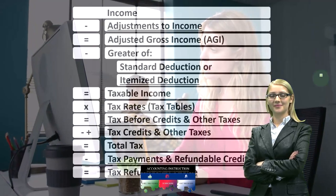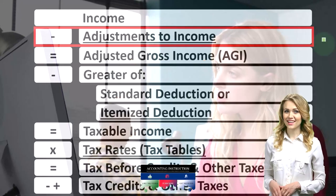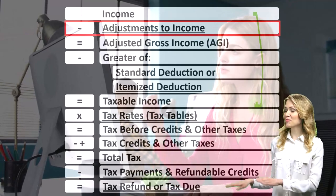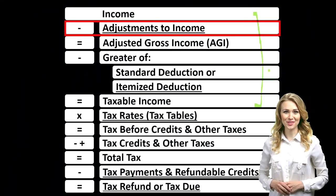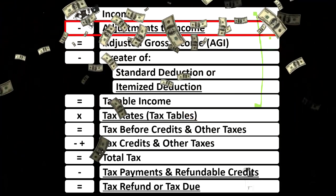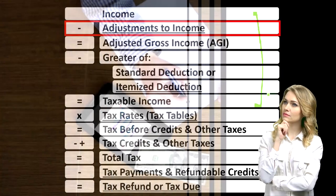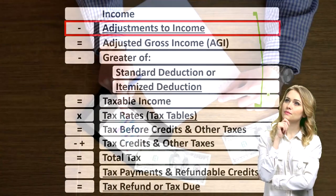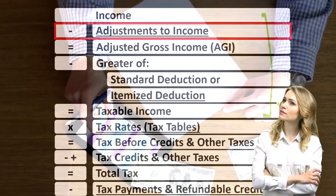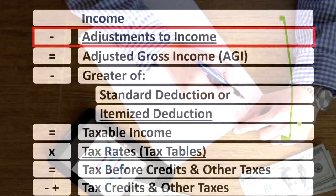Looking at the income tax formula, we're focused on line two — the adjustment to income. Remembering that the income tax formula, the first half at least, is in essence a modified income statement, although a strange one where we have income minus the equivalent of expenses being the deductions. This gets to the equivalent of net income, that being taxable income — our objective flipped on its head. Instead of trying to maximize net income, we're trying to minimize taxable income.